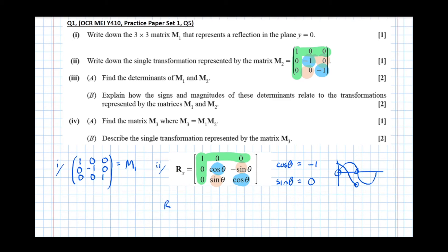So M2 is a rotation of 180 degrees anticlockwise around the X axis. For 180 degrees it doesn't matter whether we say clockwise or anticlockwise — 180 degrees clockwise is the same as 180 degrees anticlockwise. That's part 2 done.